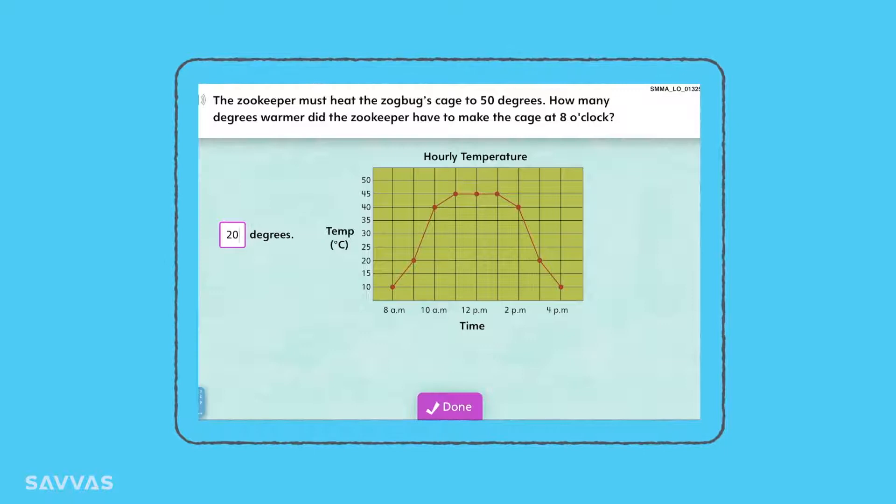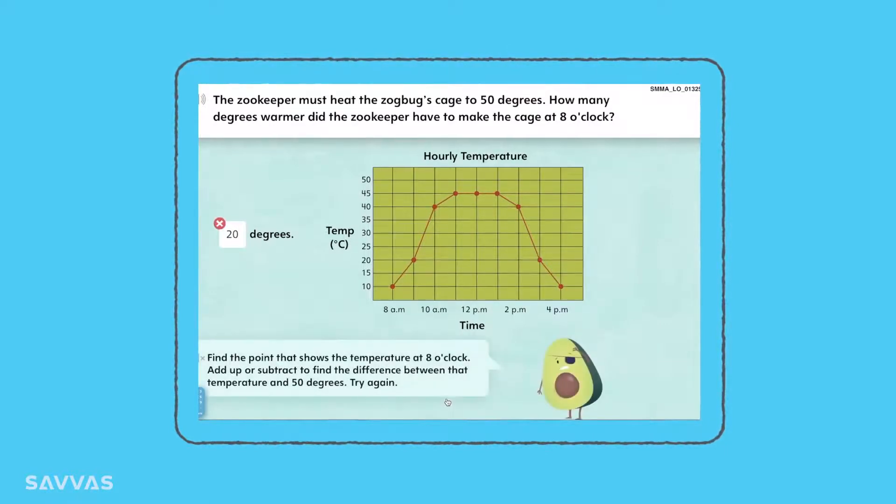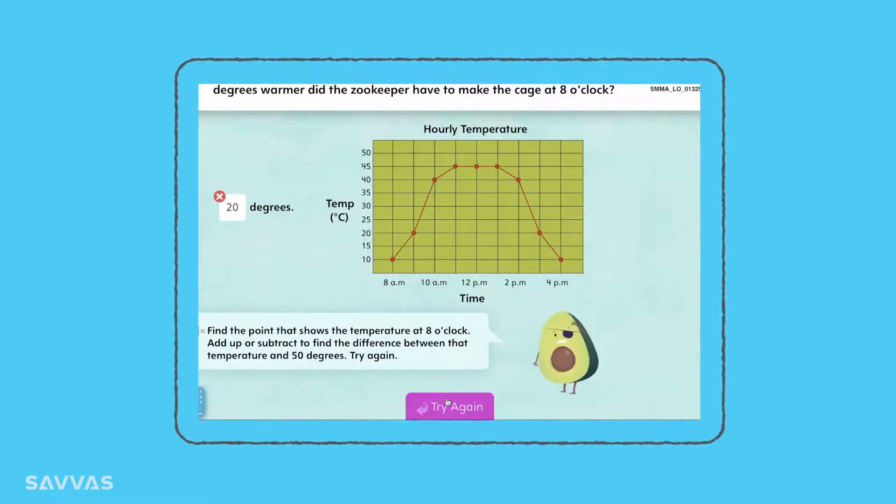As they solve the problem, they get extra support to help them if they get the answer wrong. A hint gives two different strategies to choose from so they see there are multiple ways to solve problems.